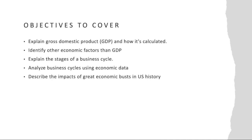Transitioning to the dynamics of economic fluctuations, let's explore the stages of a business cycle. Business cycles are recurring patterns of economic expansion, contraction, and recovery. The four primary stages are expansion, peak, contraction, and trough. During expansion, economic activity increases, reaching a peak where growth slows. Contraction follows with a decline in economic output, leading to a trough before the cycle restarts. Understanding these stages helps economists and policymakers navigate the challenges and opportunities within a given economic environment.